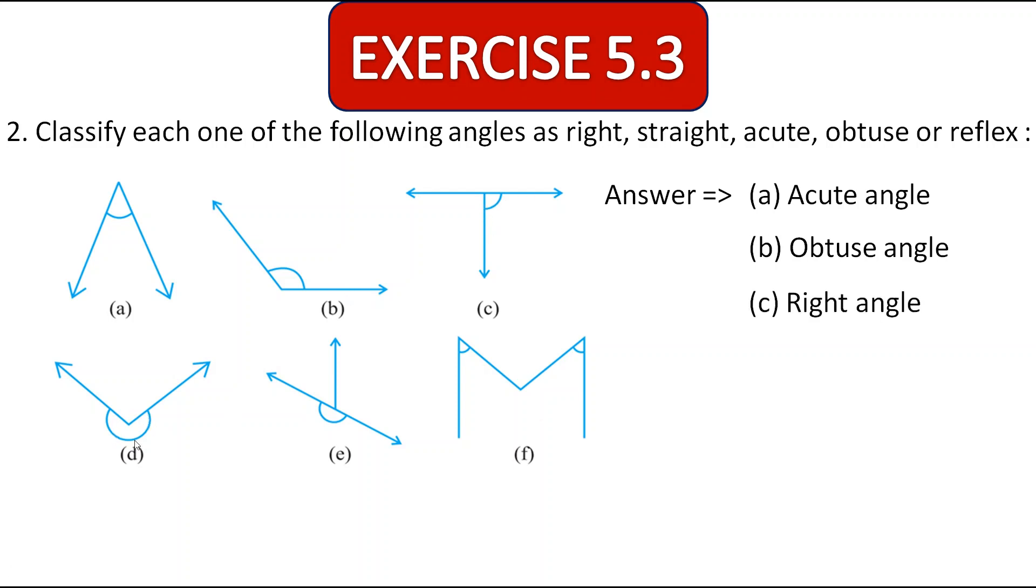Next, this one is more than 90 degrees as well as more than straight angle, that is 180 degrees, so it is reflex angle. D is reflex angle. Next here, this one is straight angle. And here it is less than 90 degrees. Here also it is less than 90 degrees. So both these angles are acute angle. So here, the exercise 5.3 ends.